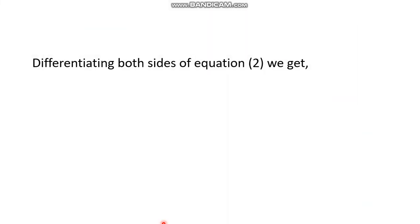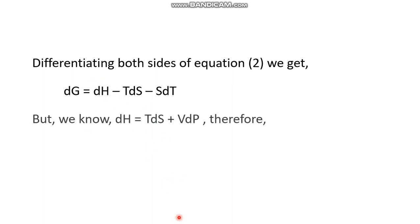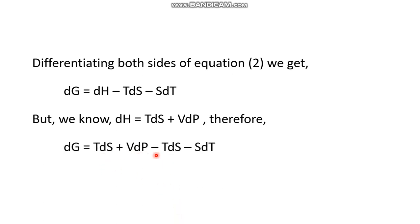Now let us differentiate equation number 2, the expression of G: G = H - TS. So dG = dH - TdS - SdT. Here dH also has its own value according to the fundamental equation: dH = TdS + VdP. Substituting this, TdS and TdS cancel each other, and the only terms left are VdP - SdT. This way we get the fourth fundamental equation of thermodynamics for a closed system.